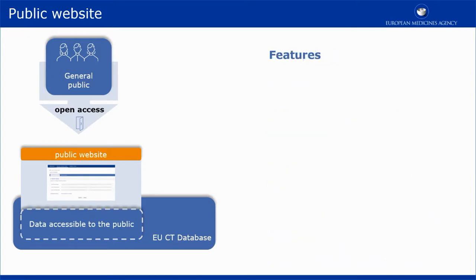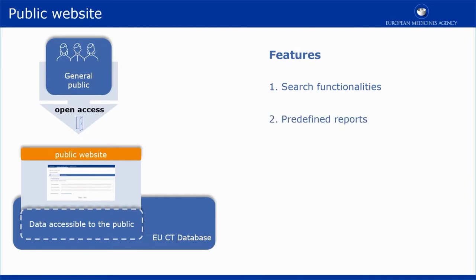To increase its user-friendliness and to facilitate the general public to retrieve the available information, the public website will provide users with basic and advanced search functionalities. Users will be able to use various search criteria to find clinical trials of their interest, view them, and download the related information that will be available to the public. Public users will have access to predefined reports.